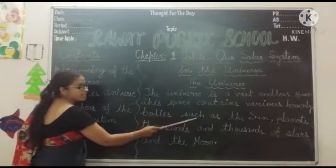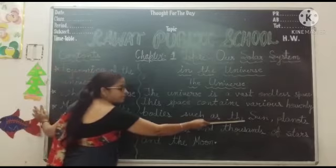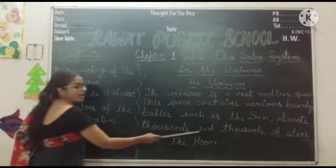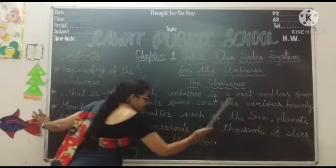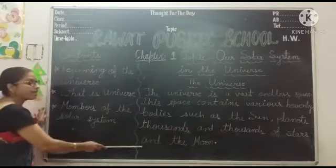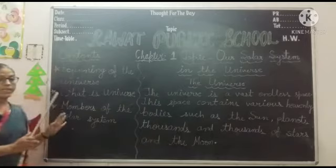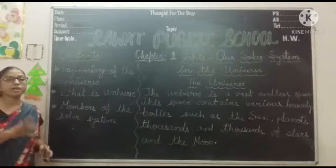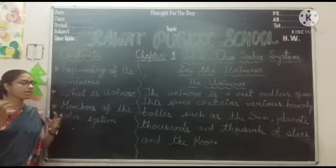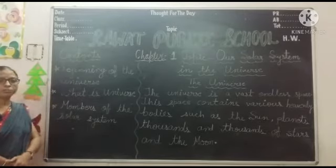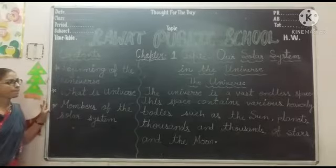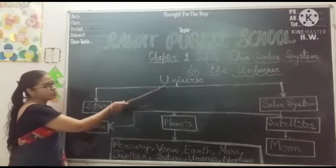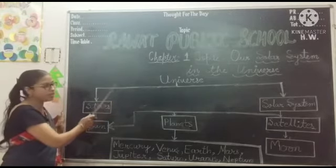This space contains various heavenly bodies: the planets, the stars, the moon. Thousands and thousands of stars and the moon. So the universe contains various heavenly bodies.